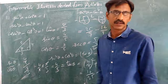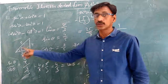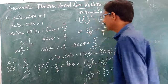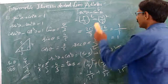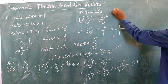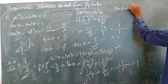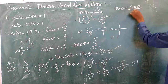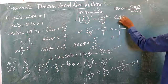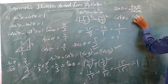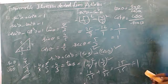Sin θ by cos θ equals tan θ. So tan θ is equal to sin θ by cos θ. Similarly, cot θ is equal to cos θ by sin θ. These are fundamental trigonometric ratio relationships.